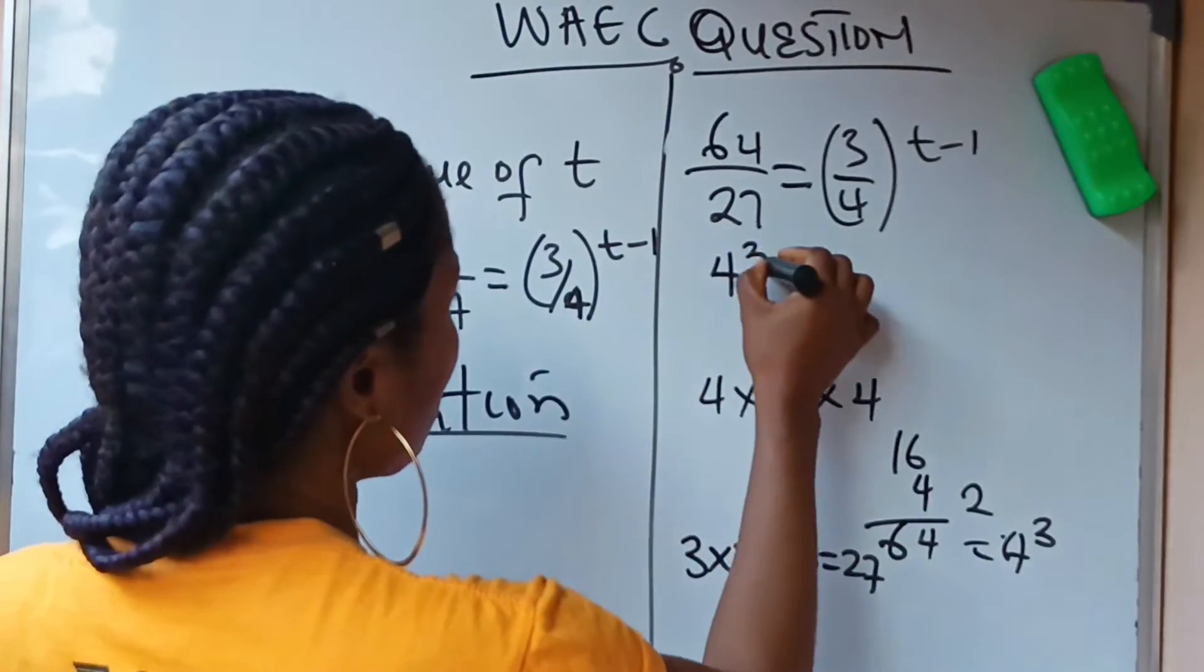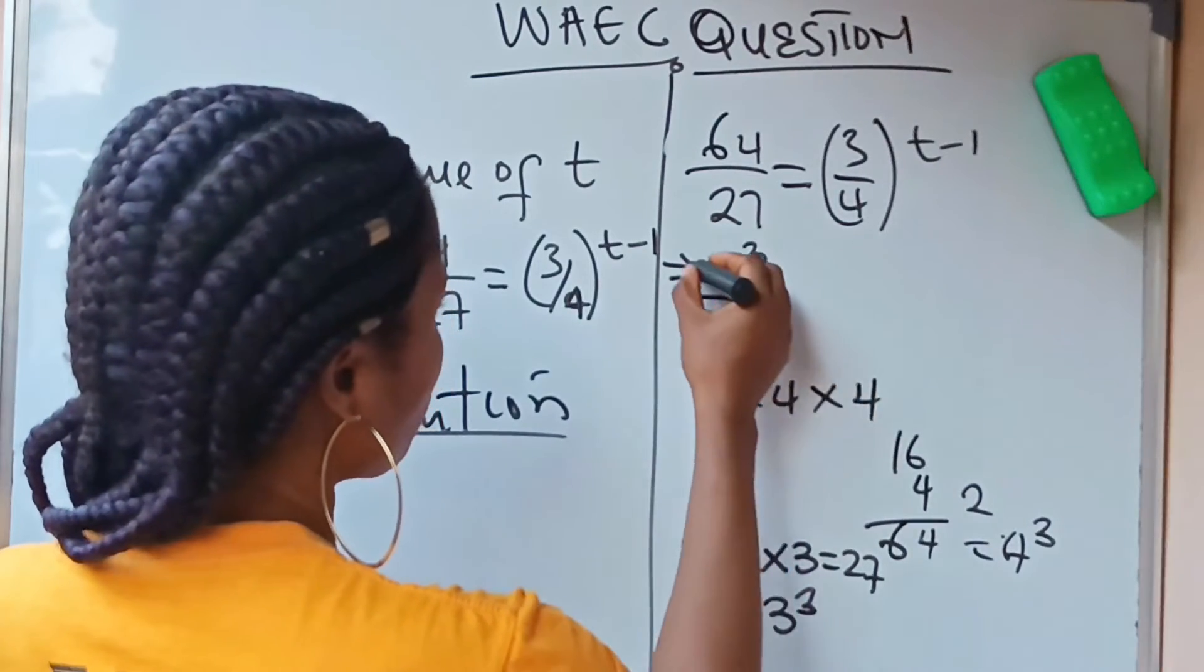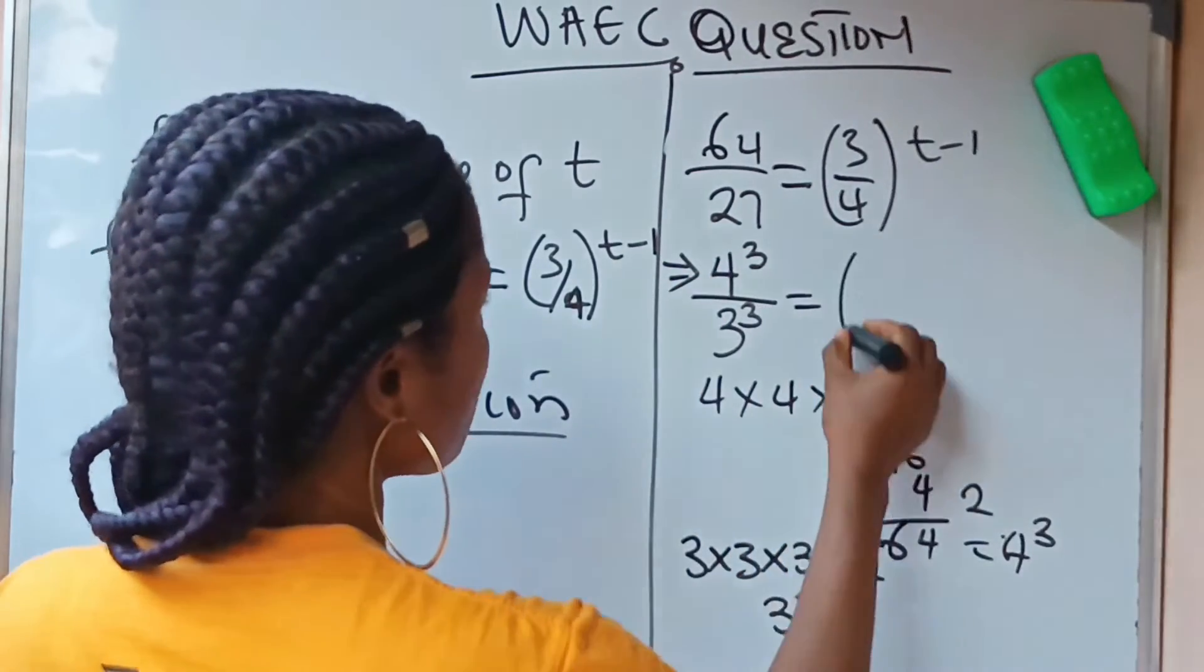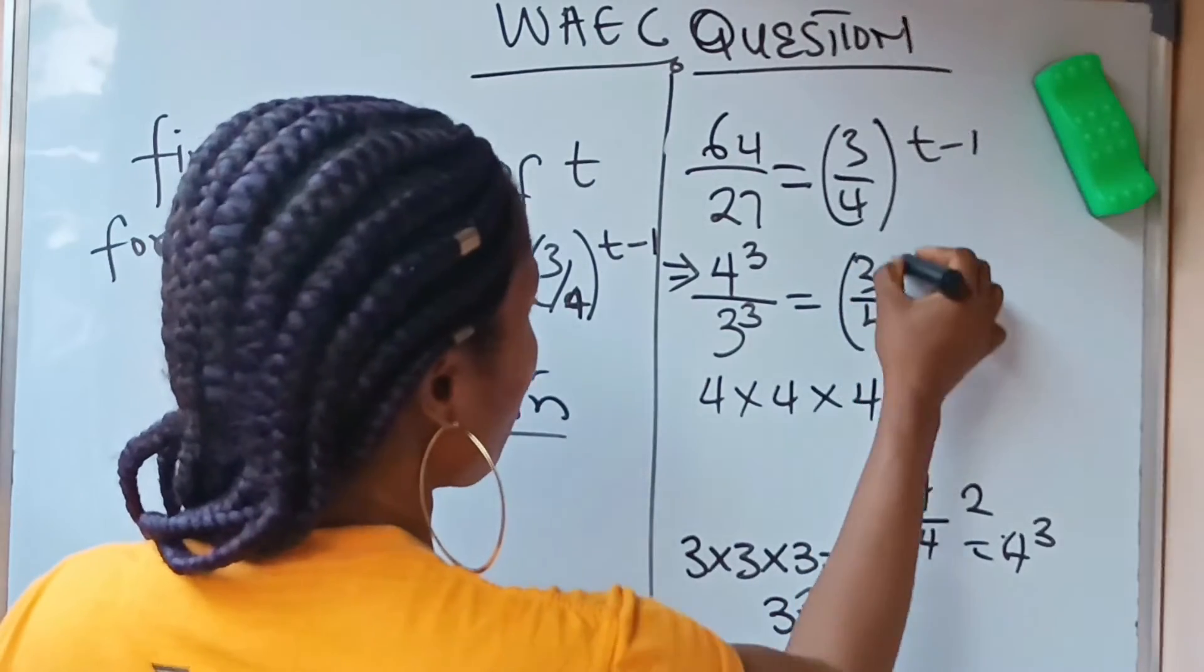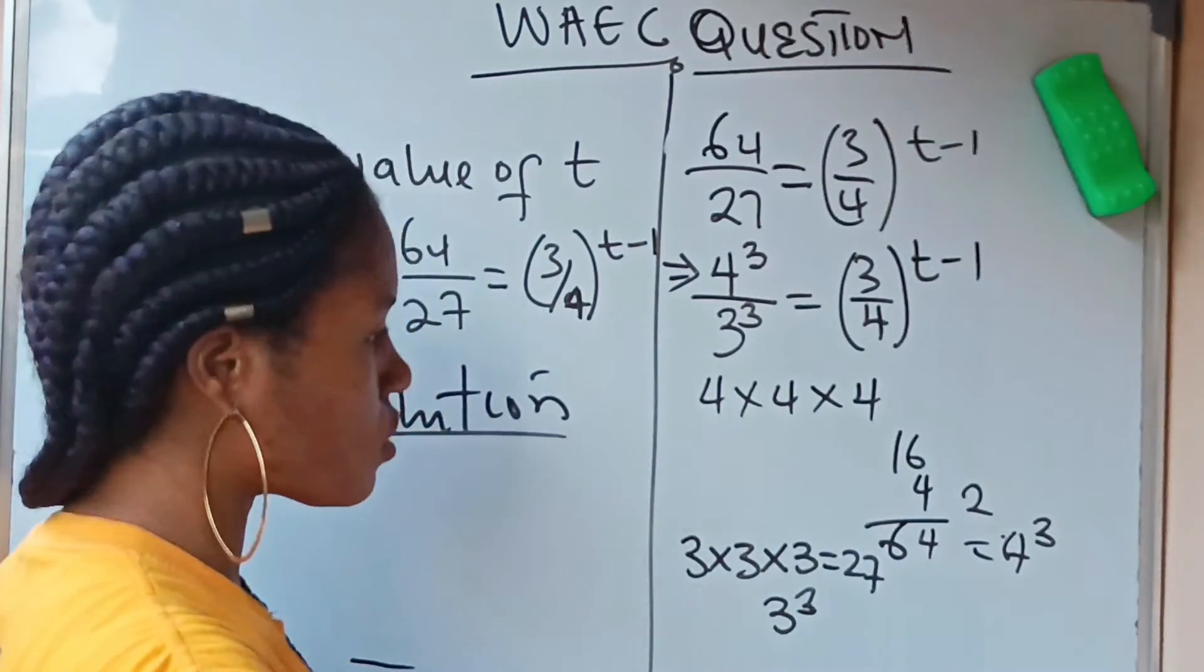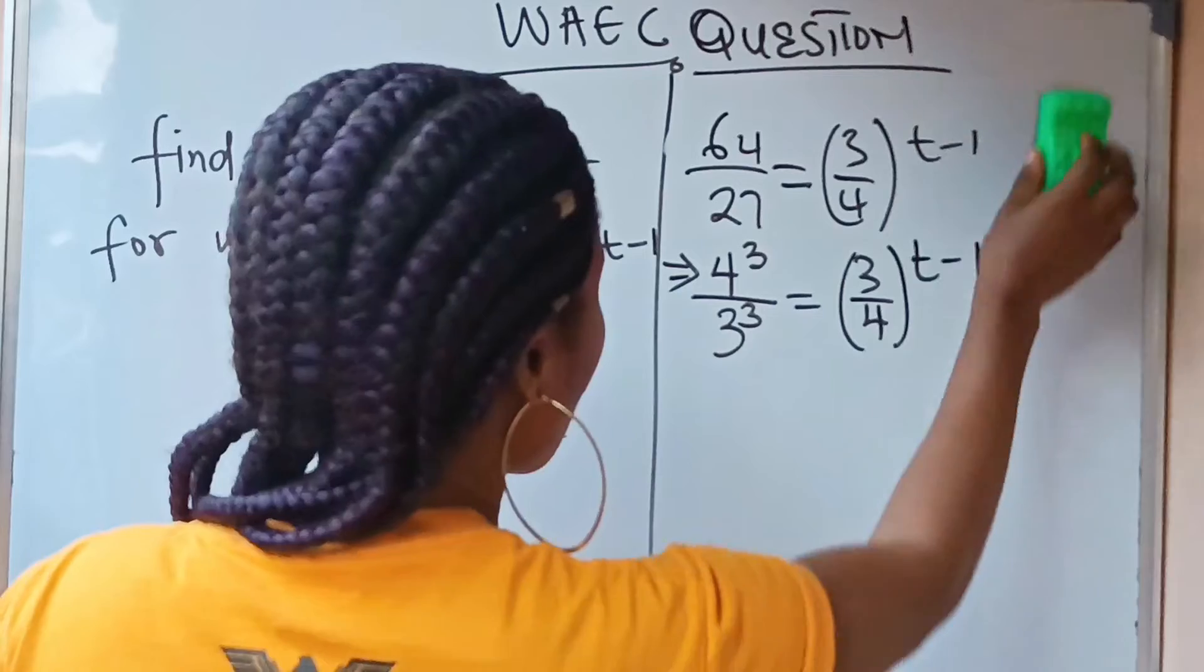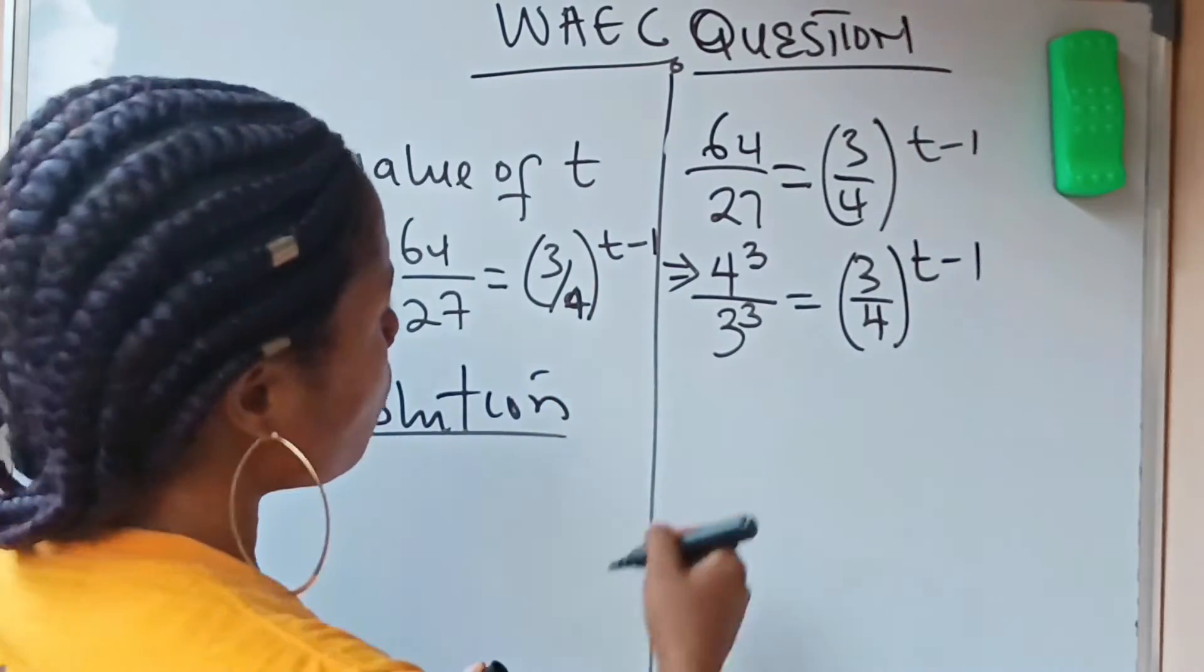I'm going to write 4 raised to the power of 3 over 27, which is 3 raised to the power of 3, is equal to 3 over 4 raised to the power of t minus 1. Now let's go ahead and solve this.